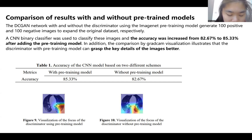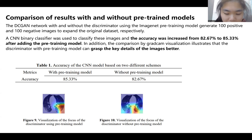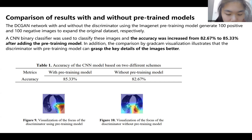ImageNet is a large database containing millions of pictures across more than 1000 different categories. By pre-training the model on ImageNet, the model can learn a large number of general features relevant to image recognition tasks, which makes the model more generalizable to new tasks. Thus, the pre-training model using ImageNet can improve the accuracy of image classification. Using GradCAM visualization in Figures 9 and 10 to analyze and compare the discriminator's focus on the image, the red area represents the focus of the discriminator, and it can be found that the discriminator using the ImageNet pre-training model is more accurate in capturing image details.